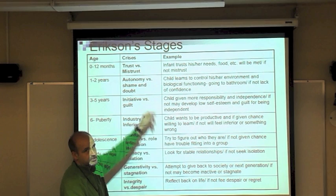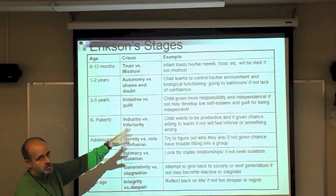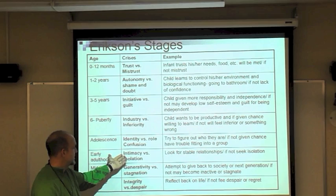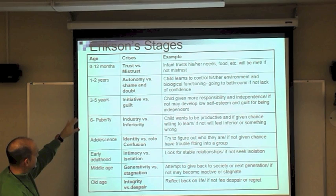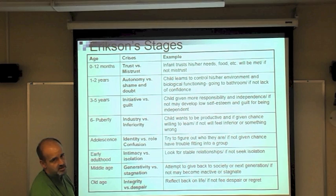Erikson believed early parental influences shape personality, but also that environment plays a role. At home, parents are the key influence; when the child goes to school, friends and school become key. Erikson's stages with their crises: Trust vs. mistrust (first year) — ties into attachment and critical period; Autonomy vs. shame and doubt (ages 1–2) — child learns to control their environment; if not given independence like going to the bathroom alone, they develop doubt about their abilities.